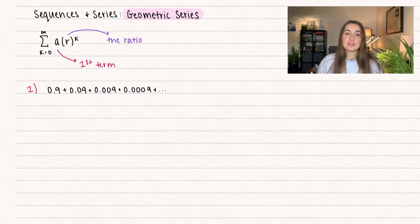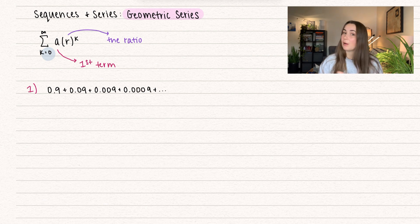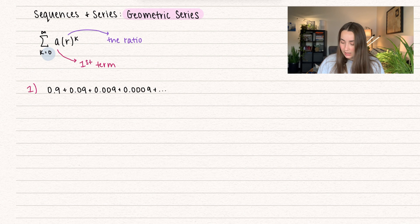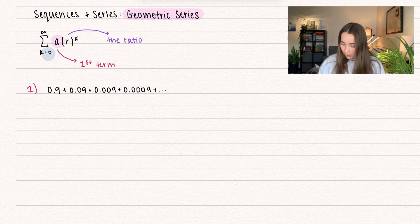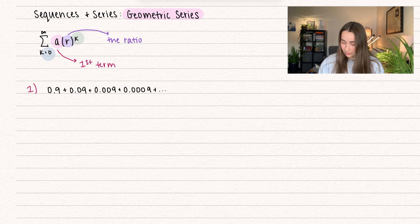Here we have what a geometric series looks like. Notice the first thing is that k starts at zero. Our index always has to start at zero — not at one, not at two, not at three — it has to start at zero. It goes up to infinity. Then we have a, which is going to be our first term, multiplied by r, which represents the common ratio — it's what it's being multiplied by every time — and then to the power of k. So let's go ahead and see an example of this.